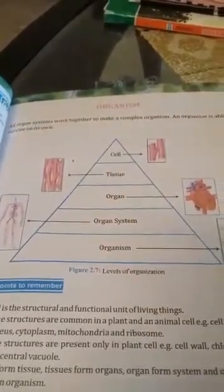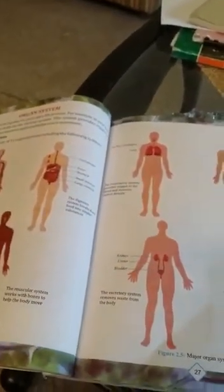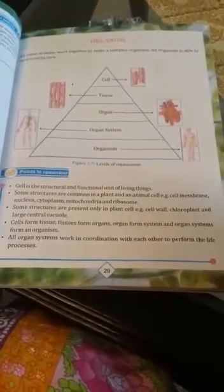We studied six to seven organ systems here. All of these organ systems together make up a human body, and a human is then able to survive independently. All the organ systems work in coordination with each other to perform the life processes.